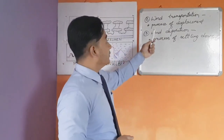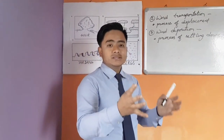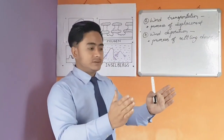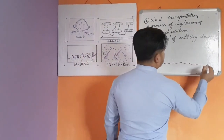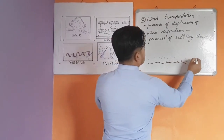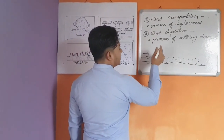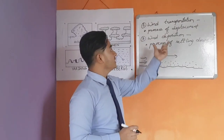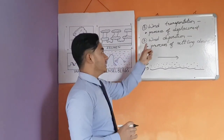The second work of wind is wind transportation. Wind transportation is the process of displacement — when the wind blows, all the sand and dust particles are displaced or moved from one place to another. In a desert filled with sand, when the wind blows all the dust and sand particles get lifted up and move from one place to another. This process of displacement is called wind transportation.